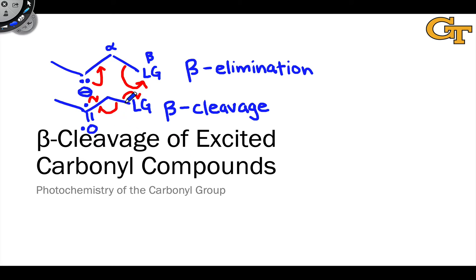Beta cleavage can give rise to enols, which commonly tautomerize back to carbonyl compounds. So it's a way, for example, to photo-reduce the alpha positions of carbonyl compounds. The result of beta cleavage is a radical pair, which can go on and do a variety of processes, as we've already seen.